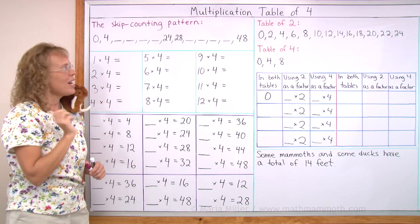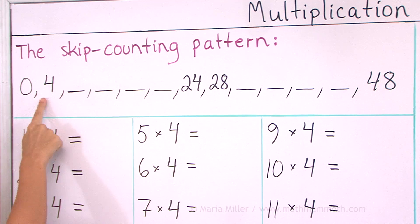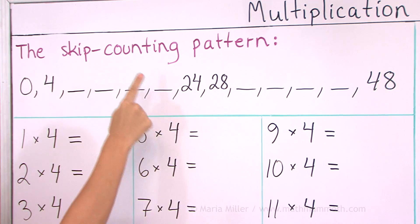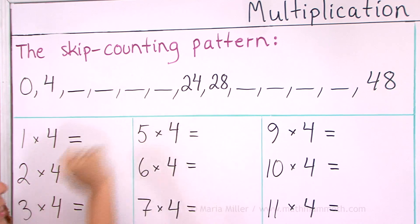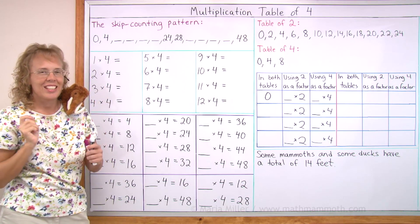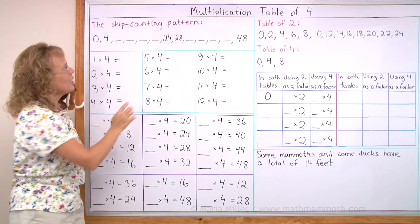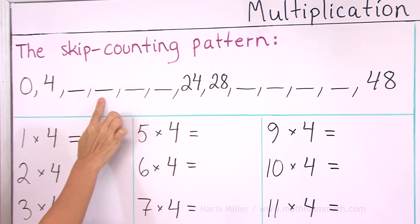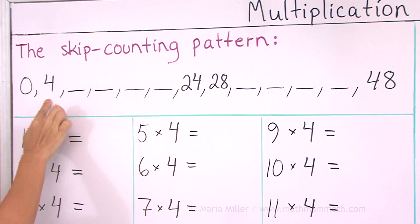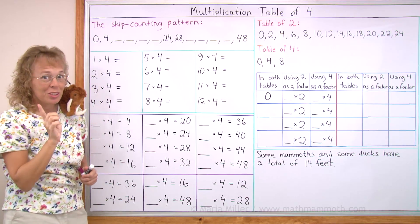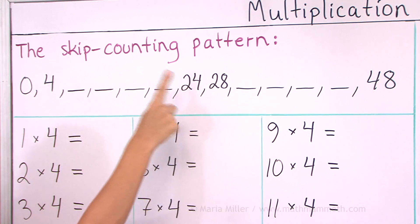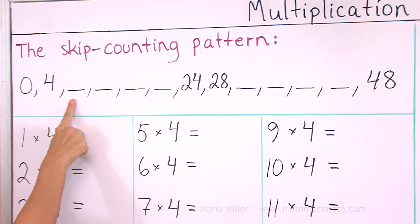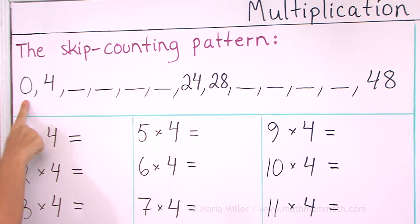Now it is your turn. 0, 4... And let's try it backwards too. From 24, 20, 16, 12, 8, 4 and 0. Your turn. 24... 4 and 0.